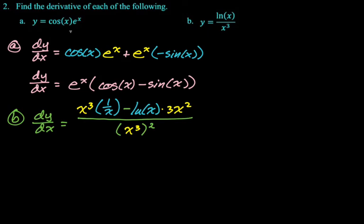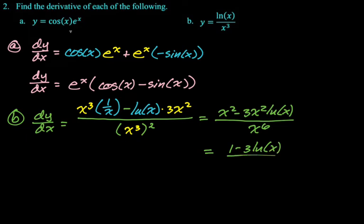Alright, now I'm going to clean this up a little bit. The numerator cleans up to x squared and then minus three x squared natural log of x. The denominator becomes x to the sixth. You look at that and you're like, everything has an x squared in it. So I'm going to cancel the x squareds and I'm going to write my answer as one minus three natural log of x over x to the fourth. It's not pretty, but that doesn't really matter. We just had to find the derivative.